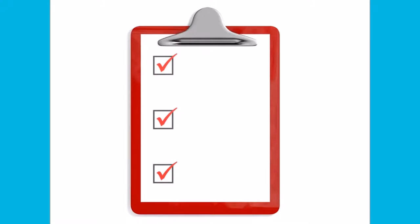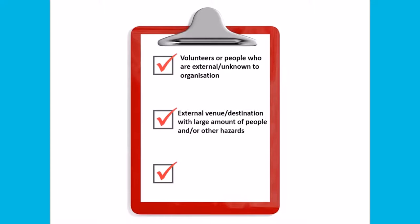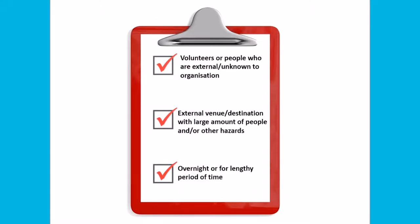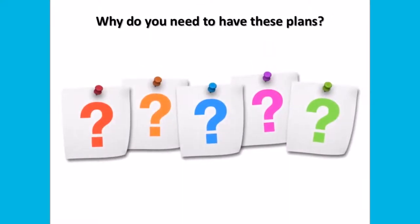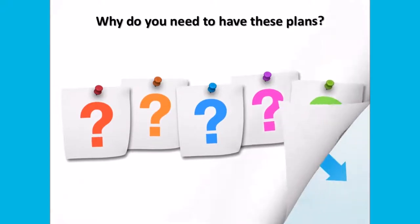For example, you may wish to consider whether the activity or event involves the participation of volunteers or people who are external to your organization; is to take place at an external venue or destination with a large amount of people and/or other hazards, for example involving water hazards such as ponds, lakes or pools; or is to take place overnight or for a lengthy period of time. It is important to note that these are just some examples of the types of things which you might consider to assist in determining if an activity or event is high-risk.